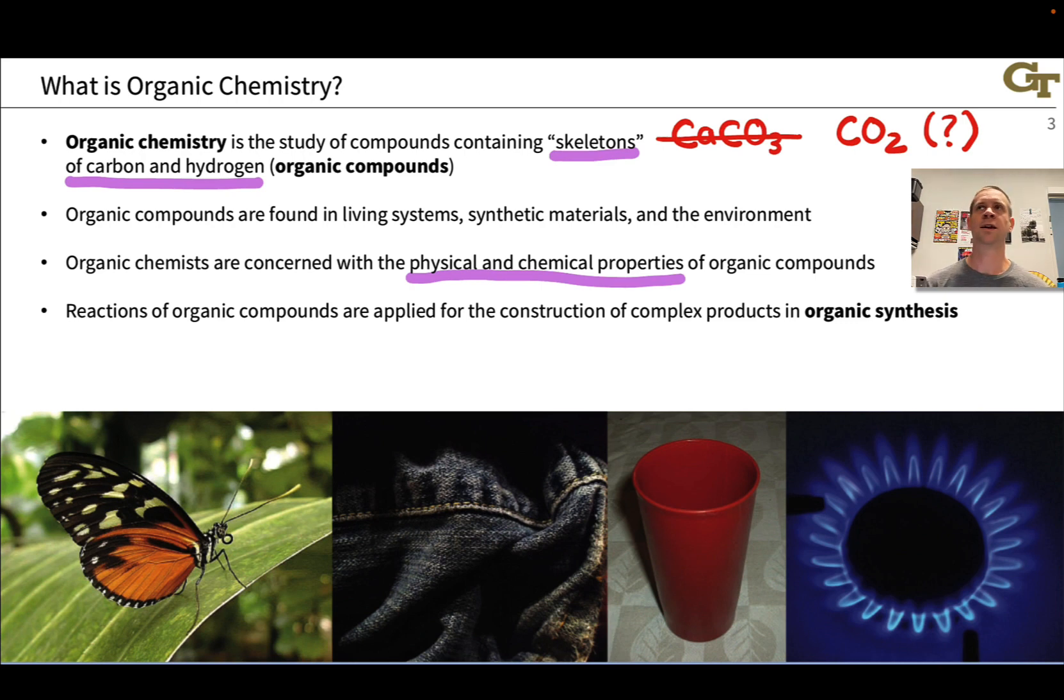And often what organic chemists will do is try to construct organic molecules with relatively complex molecular structures. Complex structure gives rise to complex function is one way to think about this. And so, the more diverse structures we can make, the more diverse functions we can achieve.